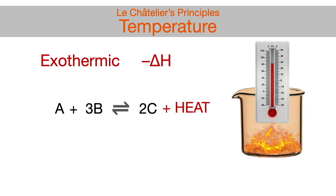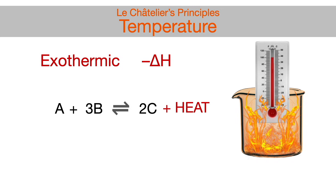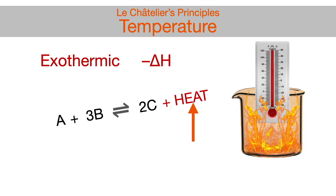The trick is to consider heat or energy a product for exothermic reactions. And just like with concentrations of products, per Le Chatelier's principles, if product concentration increases, the reaction will shift left toward reactants. It's the same if heat continues to increase or if the temperature of the environment is increased — the reaction will shift to the left toward reactants, meaning the reverse reaction will be favored and occur.